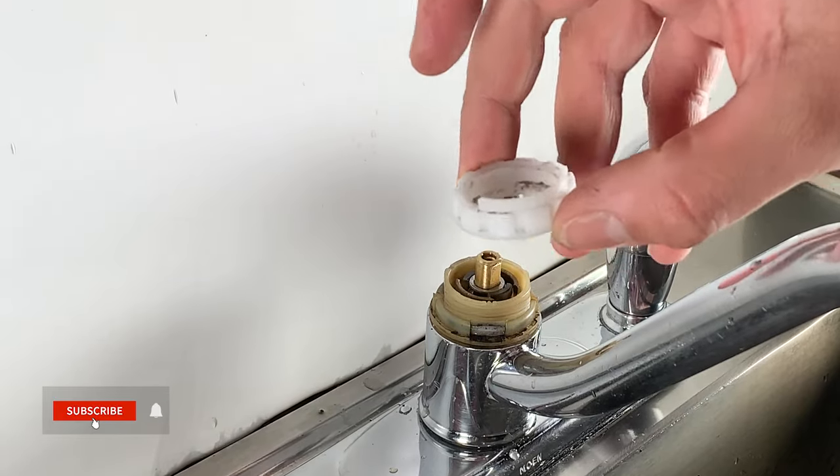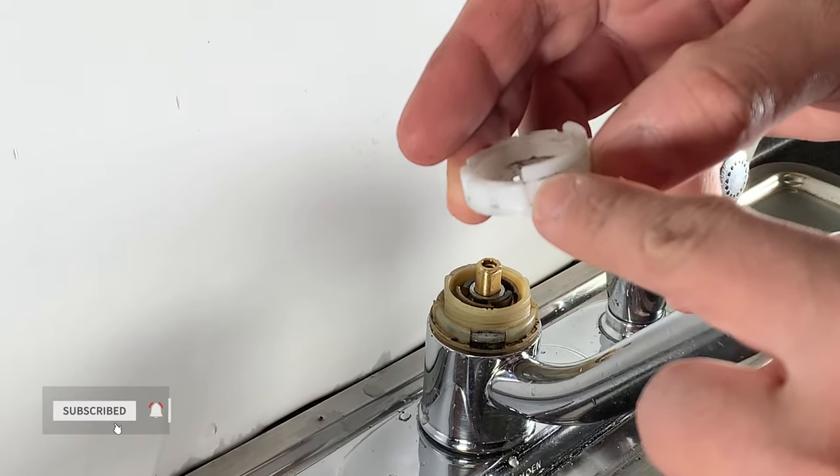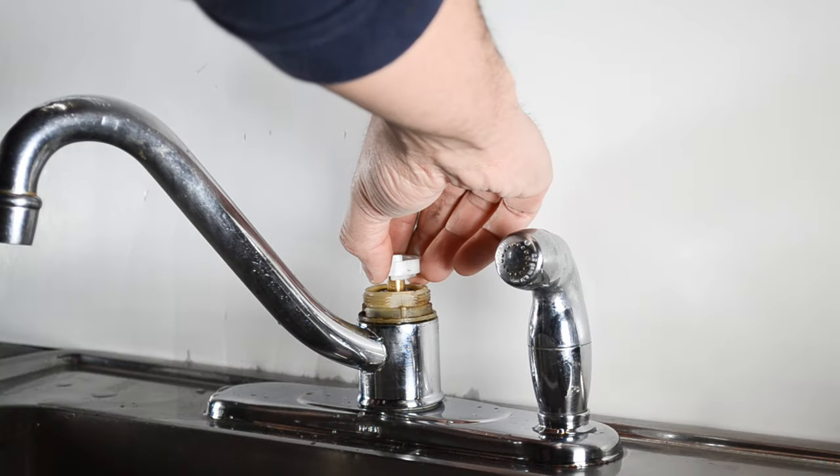install the white pivot nut back on. The half moon ridge on the nut stays in the front.